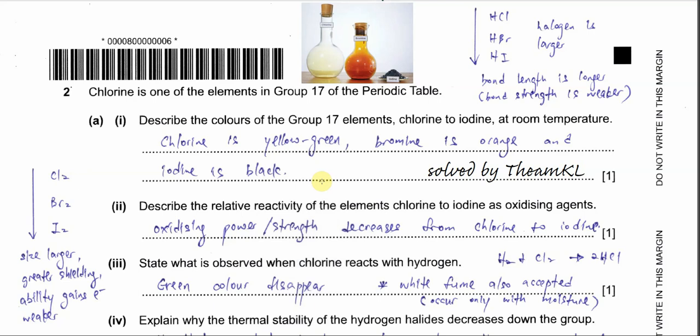Question 2. This question is about halogens. Part 1: Describe the color of Group 17 elements, chlorine to iodine, at room temperature.